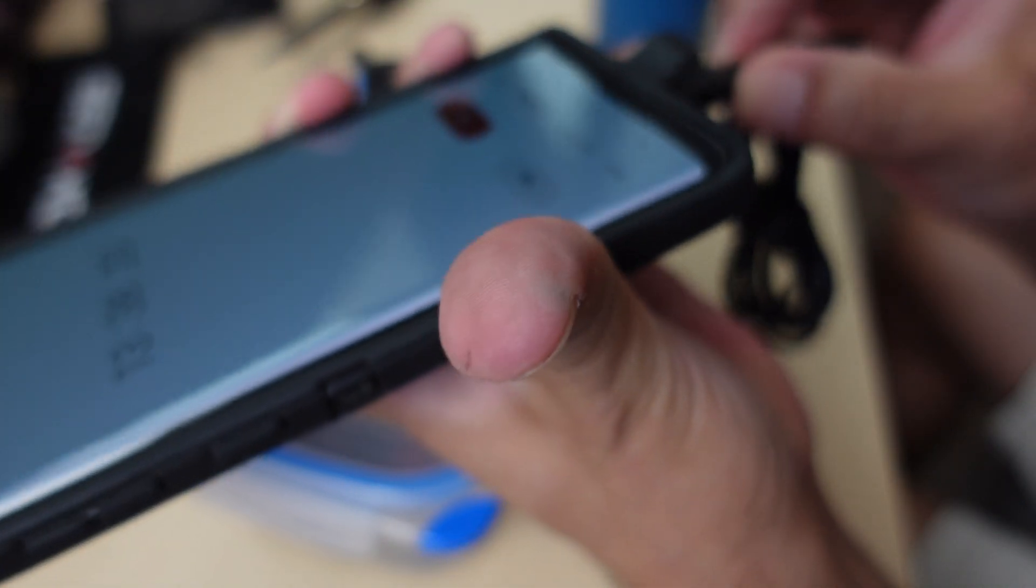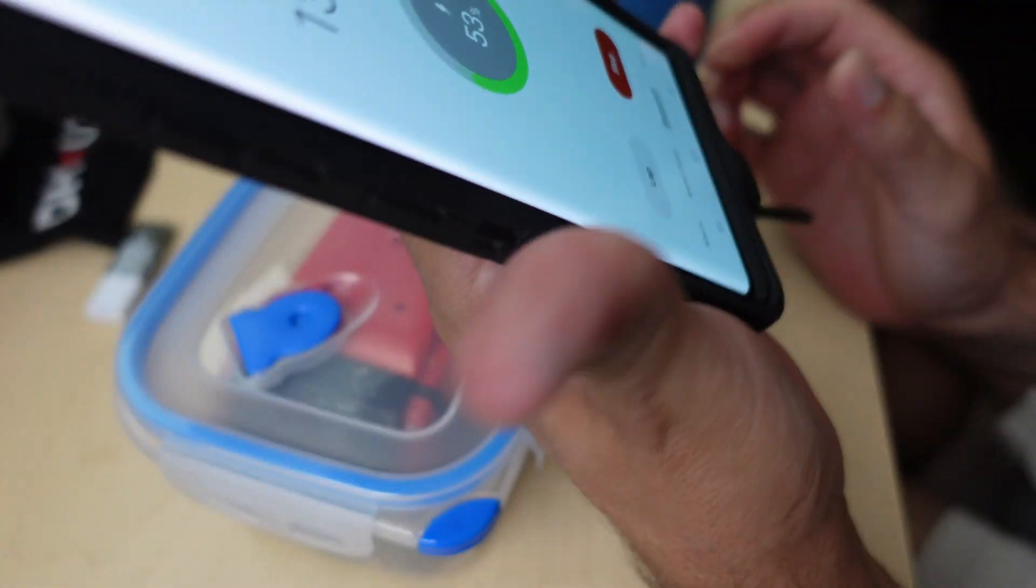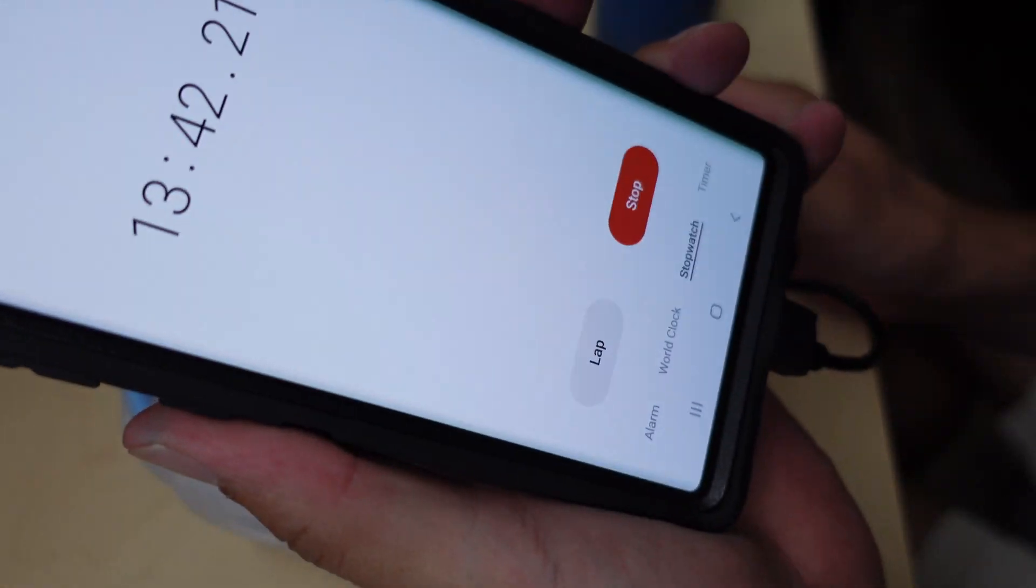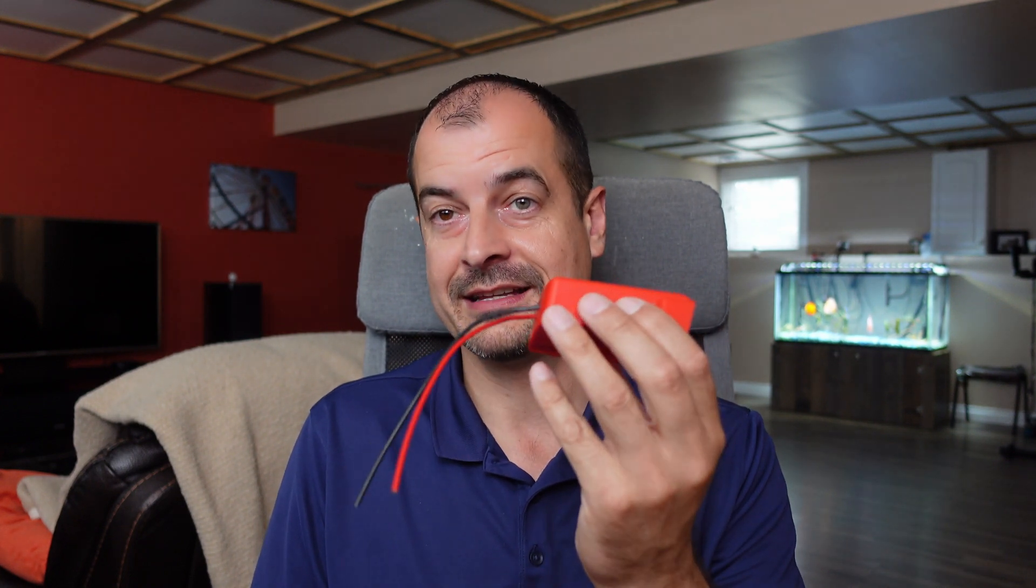In fact, next up if my Dyson vacuum ever goes through another battery that needs repairing or replacing, this thing is gonna get modified into that Dyson and we're gonna have unlimited vacuuming power with the Milwaukee adapter.